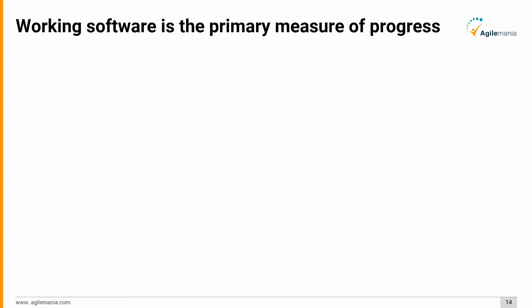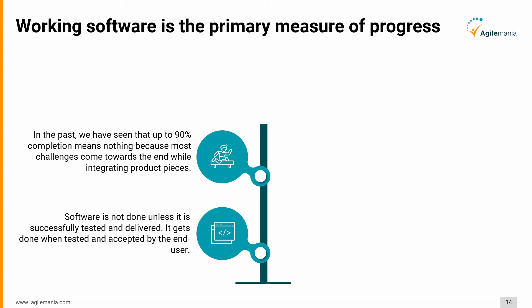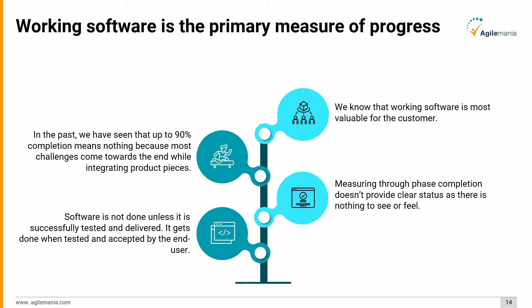The seventh principle in detail: working software is the primary measure of progress. Software is not done unless it is successfully tested and accepted by the end user. In the past, 90% completion meant nothing because most challenges come towards the end while integrating product pieces. Measuring through phase completion doesn't provide a clear status, as there is nothing to see or feel.